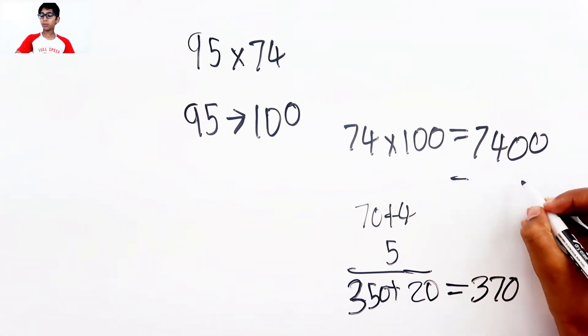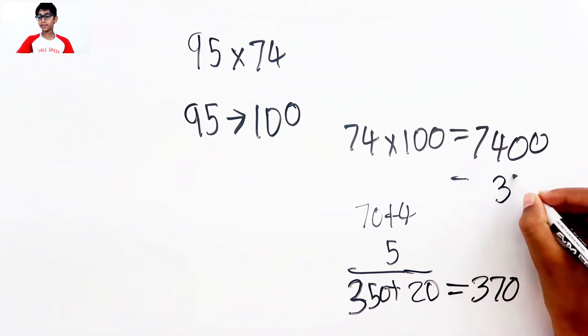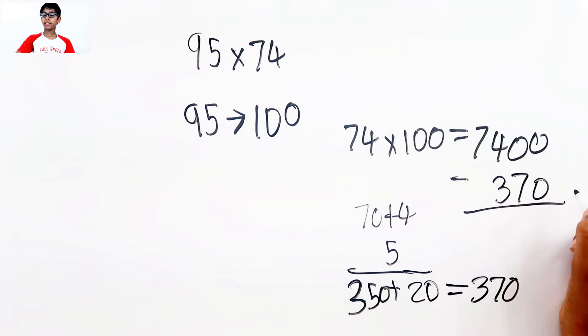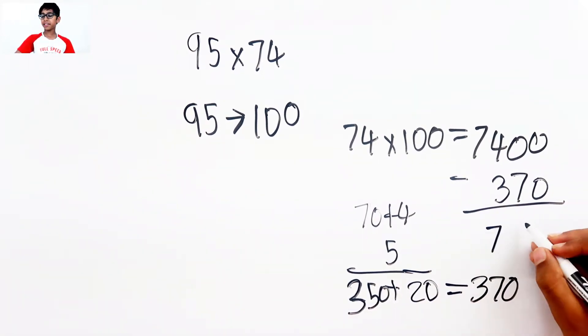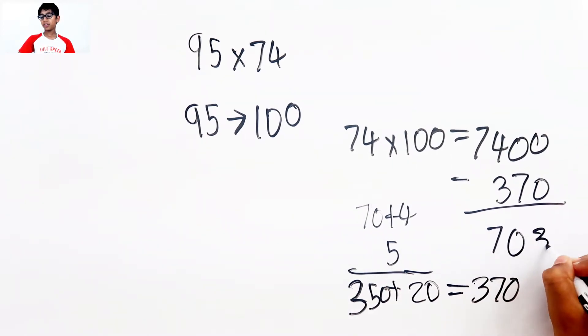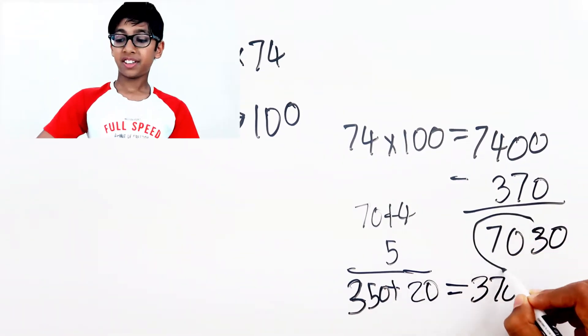Now we need to do 7,400 minus 370, and the answer is 7,030. This is the answer.